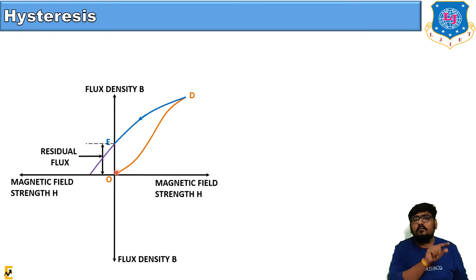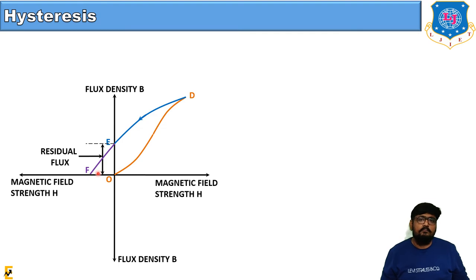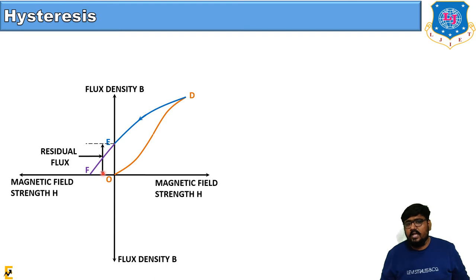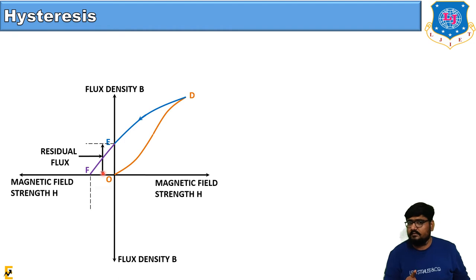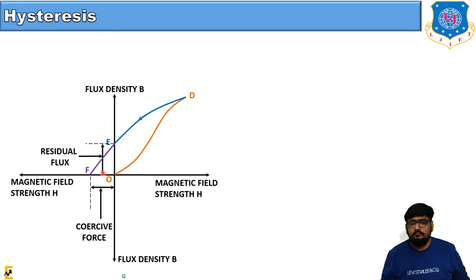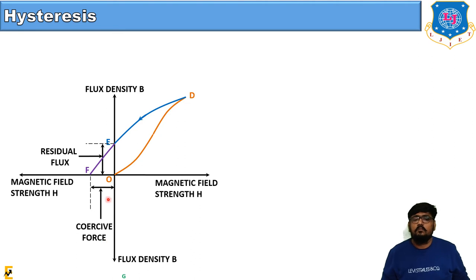If we further decrease the value of the magnetic field strength H, the curve EF is obtained. At point F the magnetic flux density has become zero, but a negative magnetic field strength H has been applied. This negative H required to reduce B to zero is known as the coercive force or coercivity.